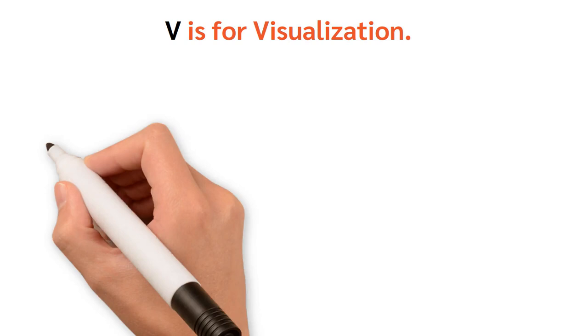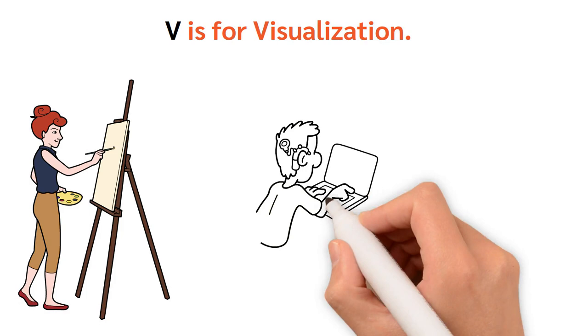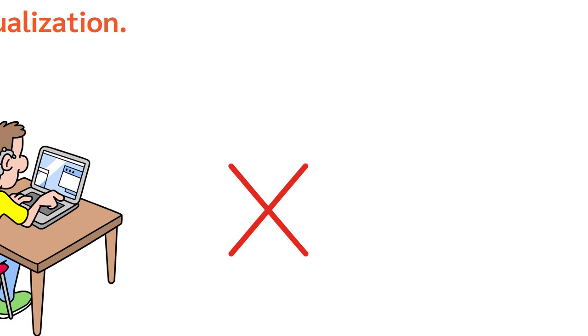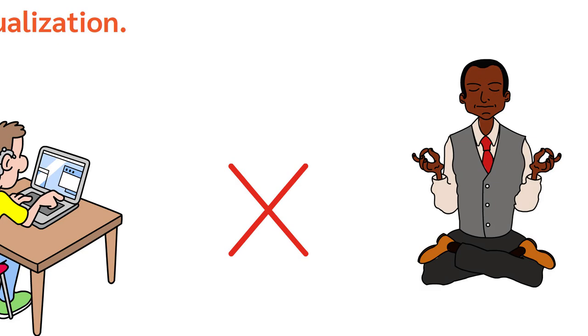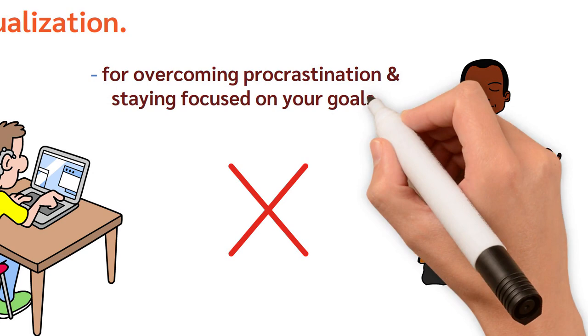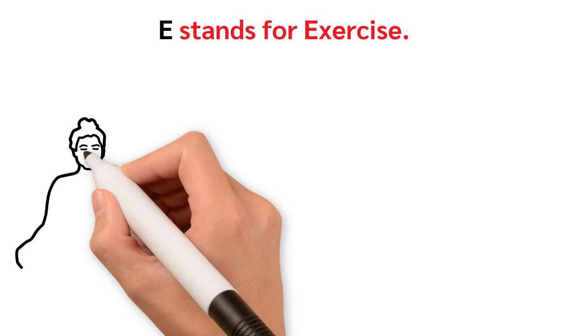V is for visualization. This is about painting the picture of your desired future in your mind. Visualize your goals, your dreams, and the steps you need to take to get there. It's not mere daydreaming. It's an exercise in mental rehearsal, setting a precedent for the day and fueling your motivation. This practice can be a powerful tool for overcoming procrastination and staying focused on your goals.